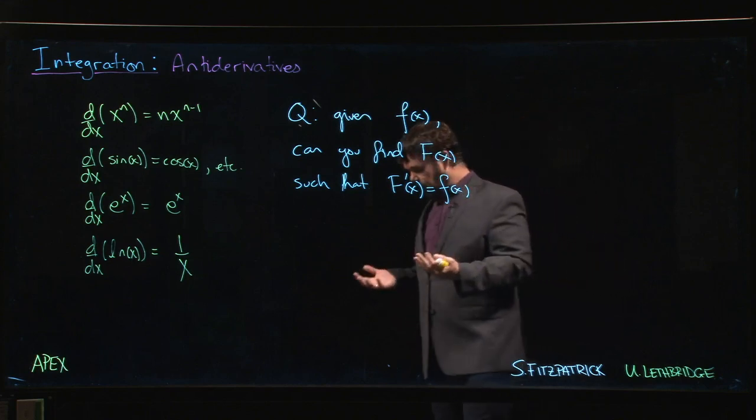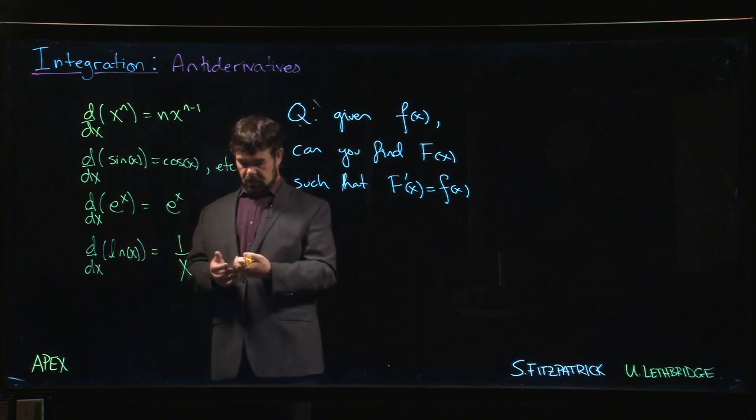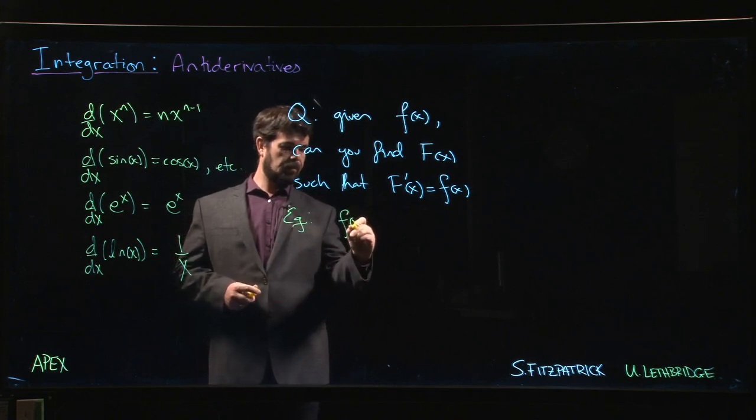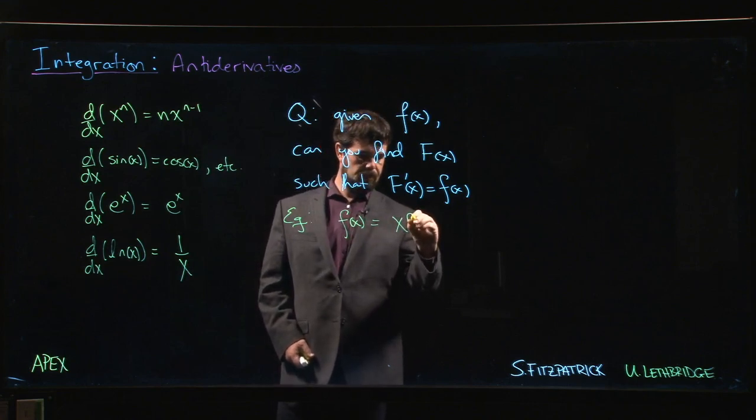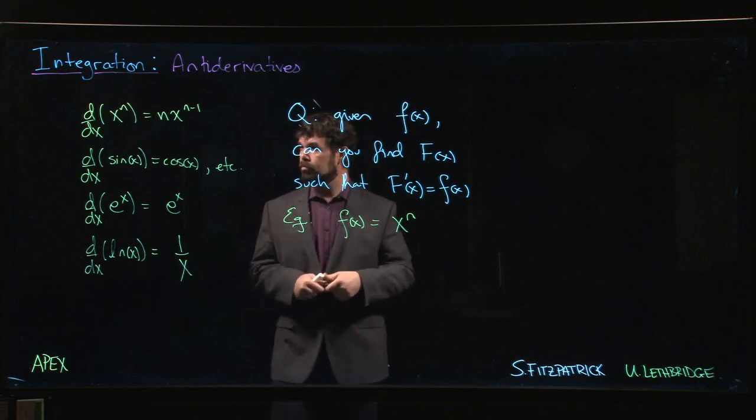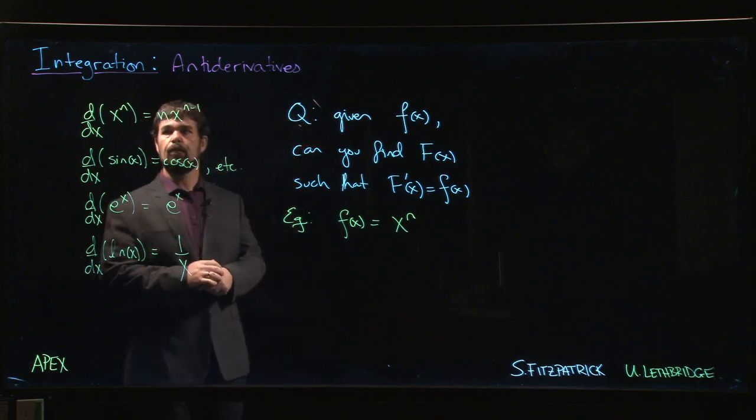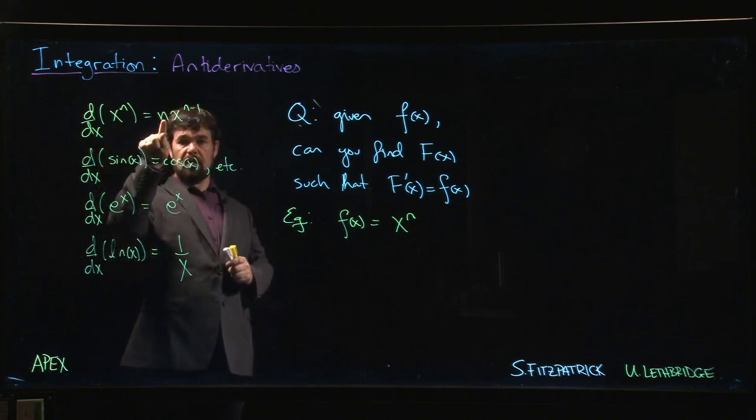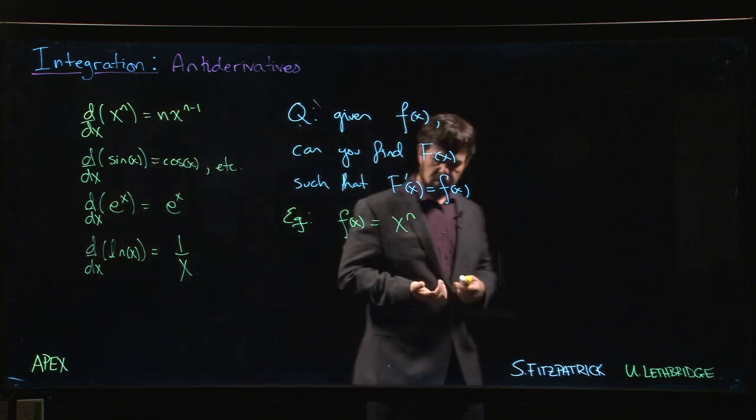Somebody hands you a function, you say what is this the derivative of? Can you back it up? Sometimes you can do this, sometimes it's harder than you might think. Let's say somebody gives you something like x to the n. Can we think where that came from? Well, probably, because we know the power rule. The power rule says when you take the derivative of a power function you do two things: first you multiply by the exponent, then you subtract one from that exponent.